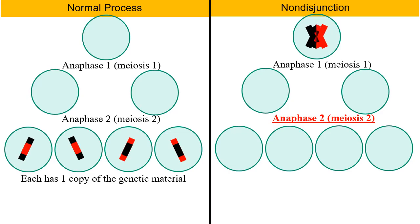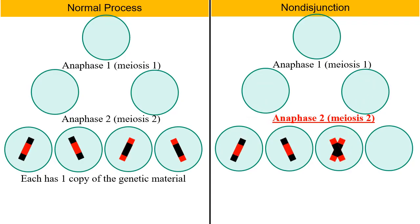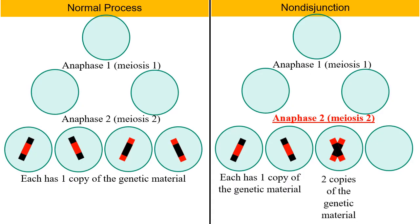On the right-hand side, crossing over occurred and recombined the chromosomes — that's normal. But as we go into anaphase 1, one chromosome went to the left cell and one to the right. Now highlighted in red is anaphase 2 of meiosis 2. Notice how in the third cell the entire chromosome was pulled to that cell. The first two cells are fine — each has one copy of the genetic material. But the third cell has two copies of the genetic material because two chromatids make up a chromosome. The cell on the right has zero copies of the genetic material.